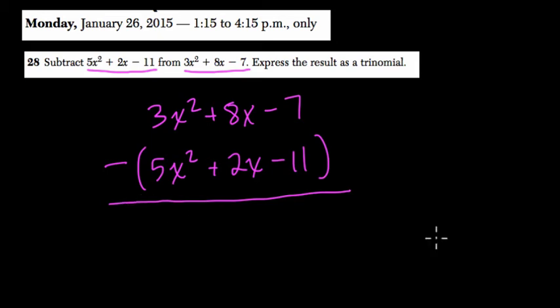Now, what is 3x squared minus 5x squared? That's negative 2x squared. 8x minus 2x is 6x. Negative 7 minus a negative 11 is really negative 7 plus 11, which is positive 4. And that's it.